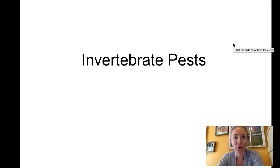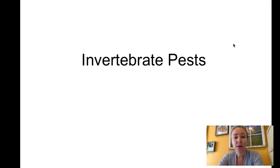Insects are an incredibly diverse group of organisms on earth and it's so important for crop production. For example, pollinators — without them, our pollen wouldn't get to different flowers and fruit wouldn't develop.